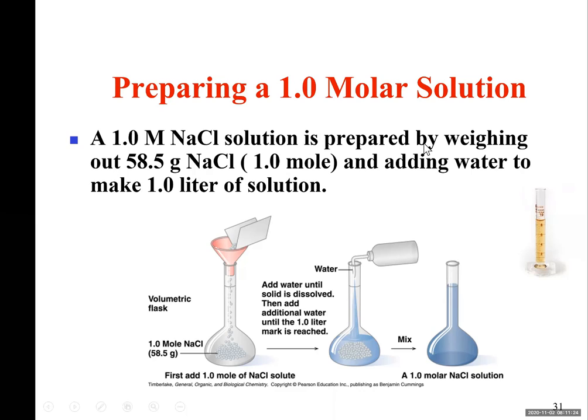And this is by weighing 58.5 grams of sodium chloride. Now, what is molar mass of sodium chloride? Na is 23 grams per mole. If you look up the periodic table, Cl is 35.5 grams per mole. You add them together, you get 58.5 grams. That's mass of one mole. You weigh one mole. You weigh 58.5 grams of sodium chloride. And then you pour the solid in a flask. This is a one liter volumetric flask.